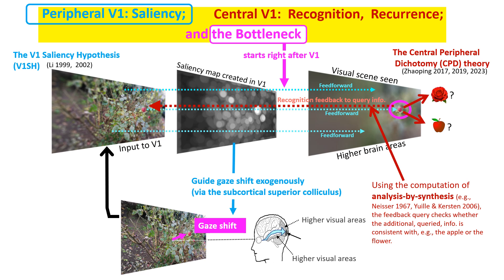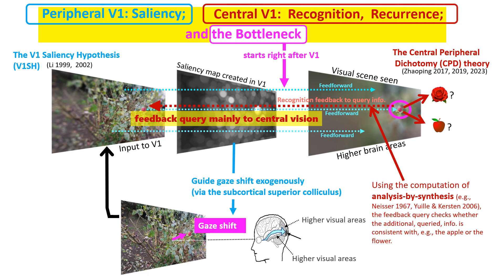This is as if looking up information from a blackboard. However, I hypothesize that this happens only in central vision due to limited brain resources, so there is a functional difference between central and peripheral vision. Therefore, central V1 is for recognition, which is helped by the recurrent feedback query.